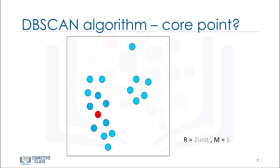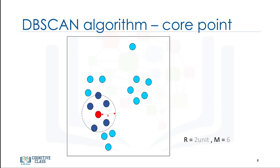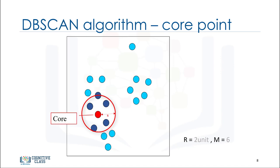Let's pick a point randomly. First, we check to see whether it's a core data point. So, what is a core point? A data point is a core point if, within our neighborhood of the point, there are at least M points. For example, as there are six points in the two centimeter neighbor of the red point, we mark this point as a core point.